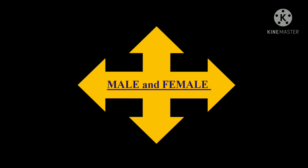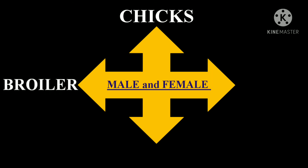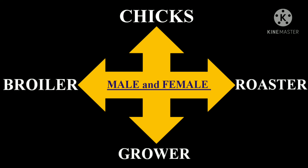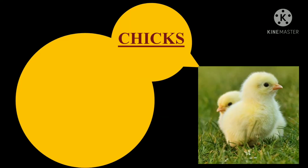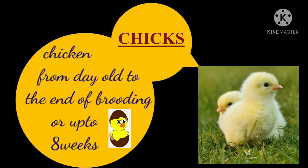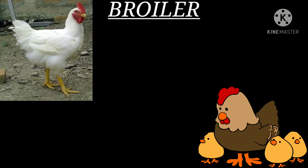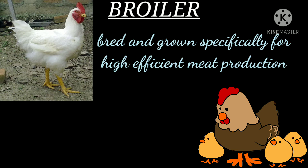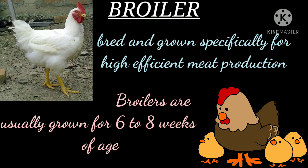Under this category we are going to study about chicks, broiler, grower, and roaster. First, chicks — either male or female, used to describe chickens from day old to the end of brooding, or up to eight weeks. Then broiler — either male or female, bred or grown specially for high efficient meat production.